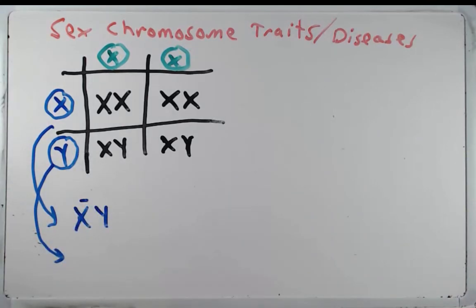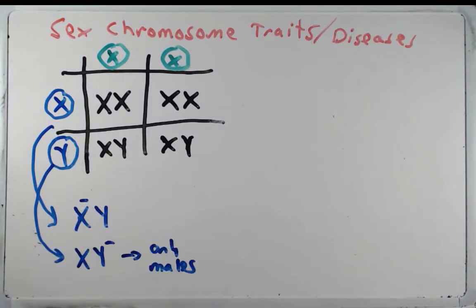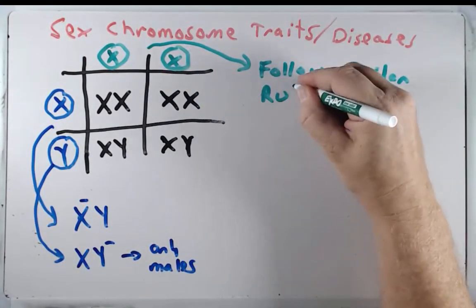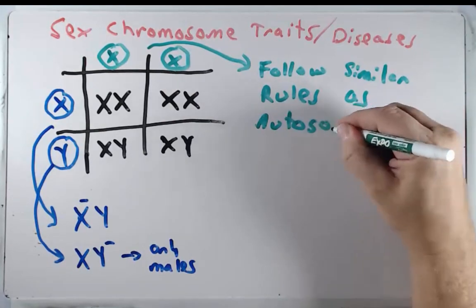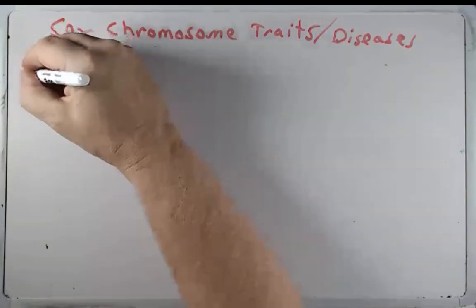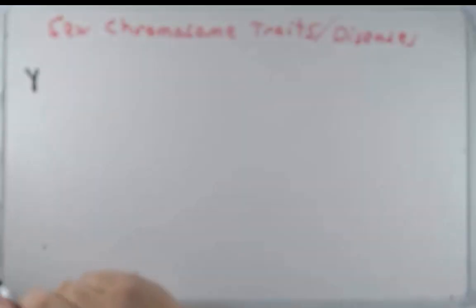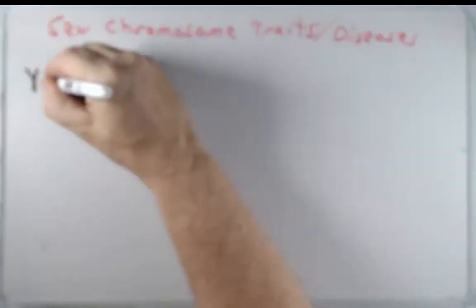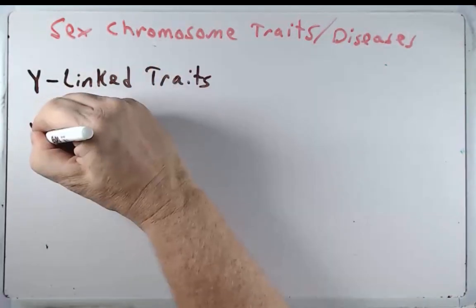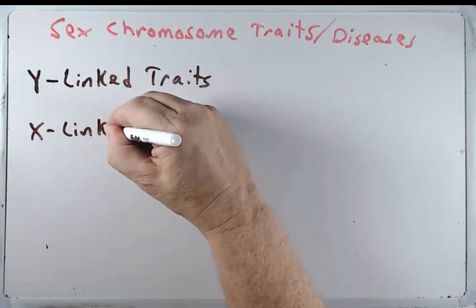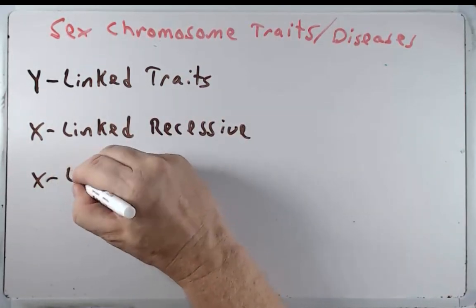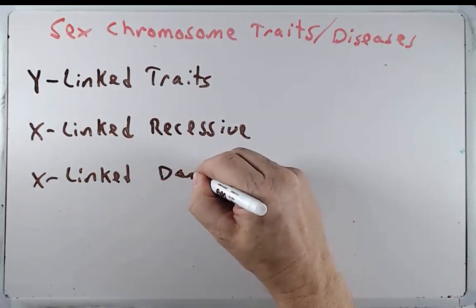Only males will express Y-linked mutations — that won't come as a shocking surprise. For females, mutations on the X chromosome follow similar rules as autosome mutations as far as whether or not they're expressing it. I want to talk about three broad categories of sex chromosome traits: Y-linked traits, X-linked recessive traits, and X-linked dominant traits.